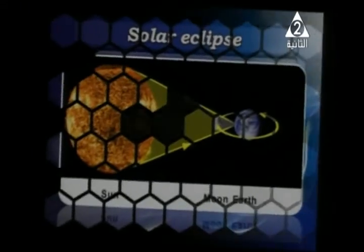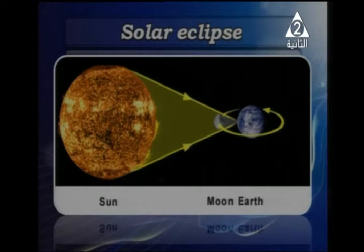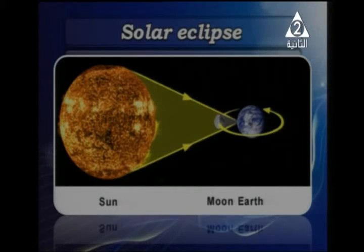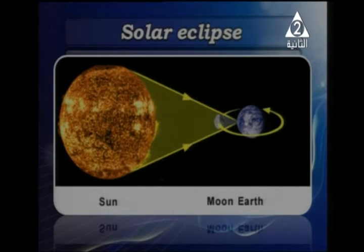The solar eclipse diagram: the Moon is found between the Earth and the Sun. The Moon makes a shadow on the Earth. Any person on the Earth's surface in the area of the Moon's shadow cannot see the Sun — this is a solar eclipse.